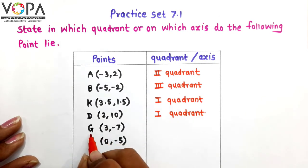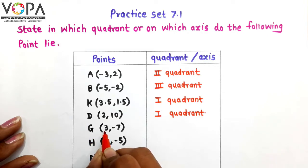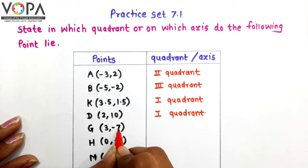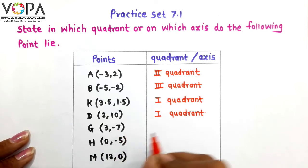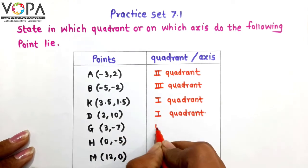Next point is G. The coordinates of point G are 3, minus 7. Therefore G lies in the fourth quadrant.